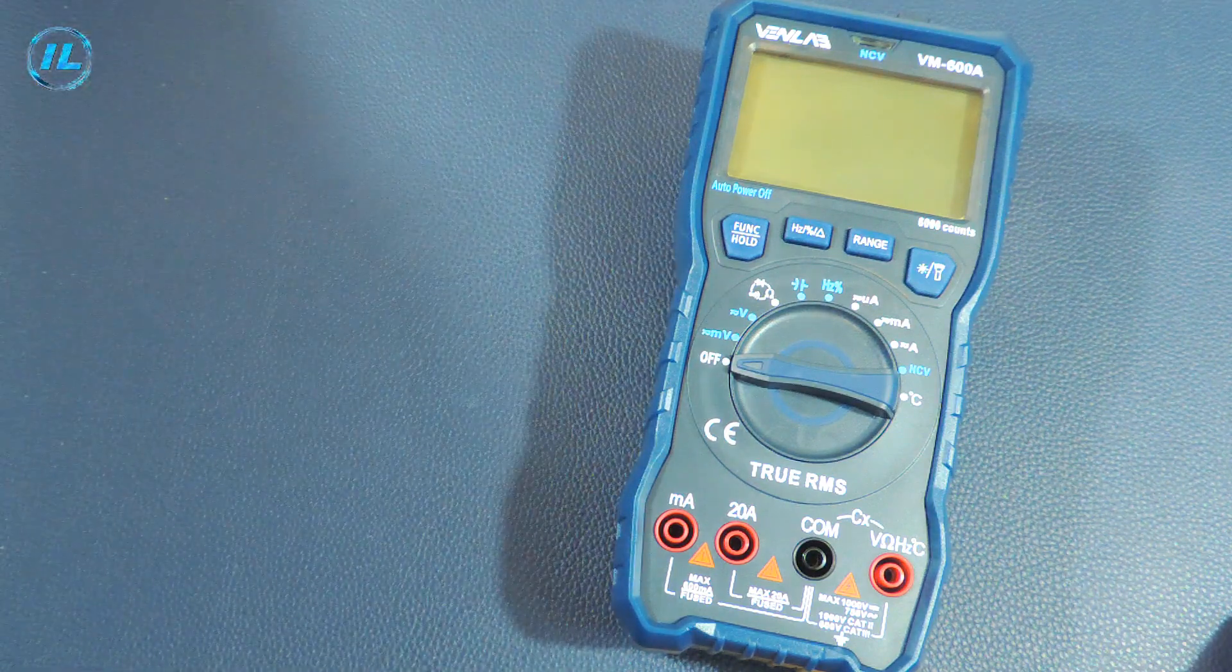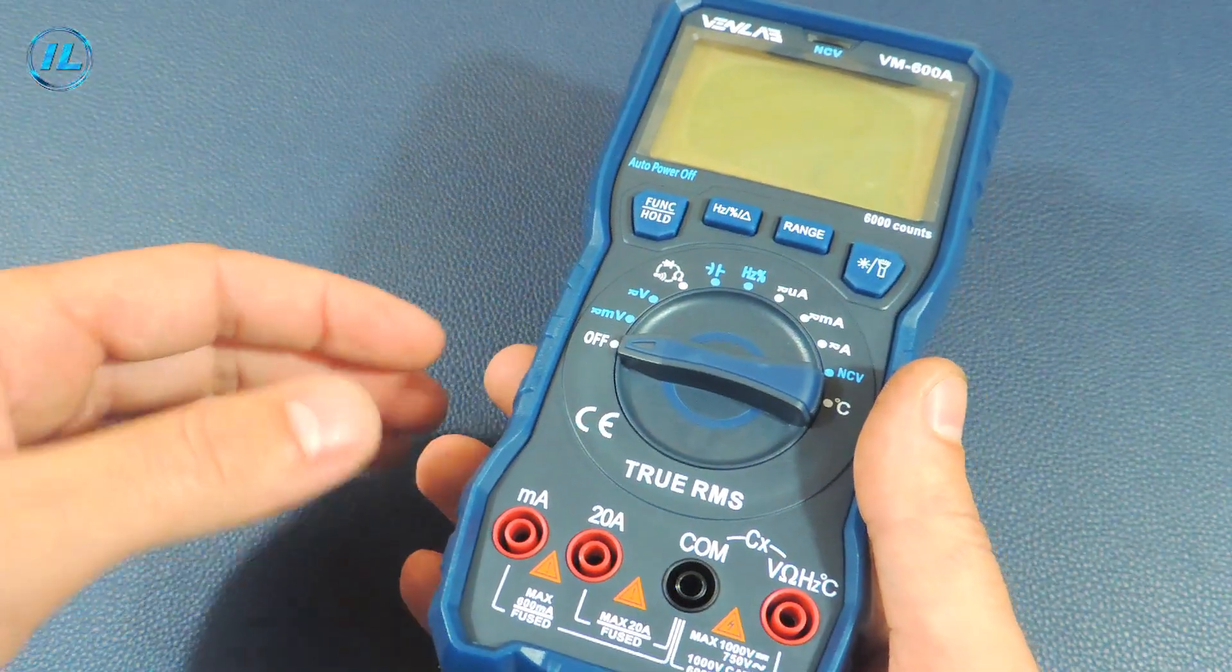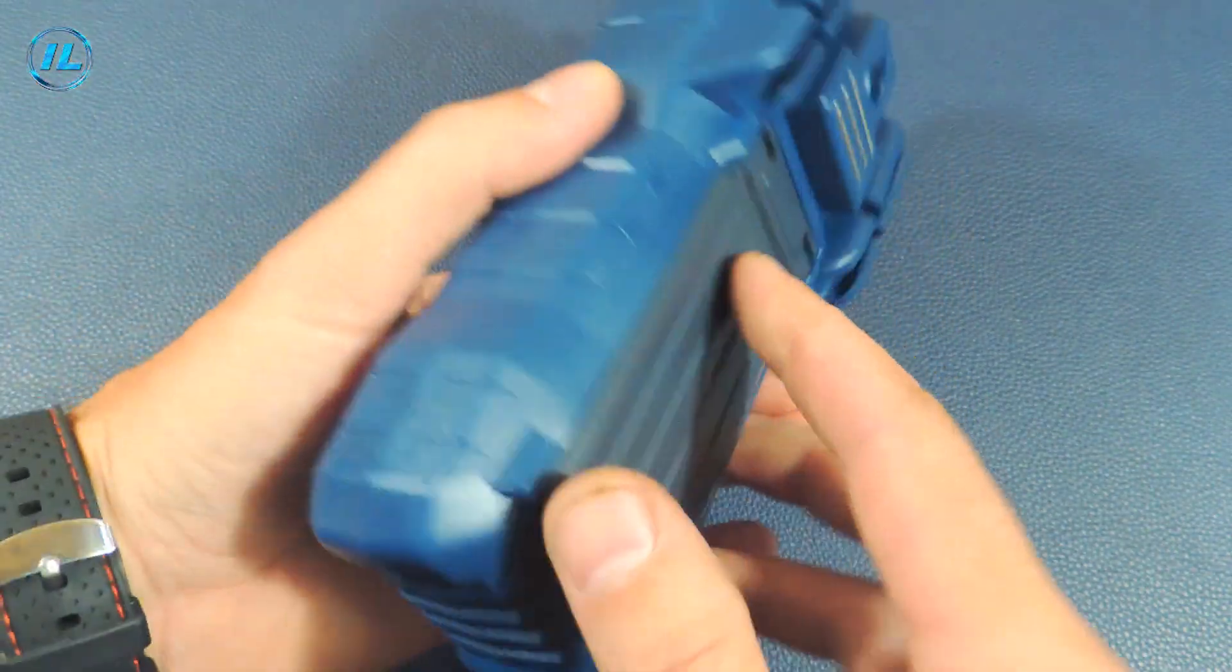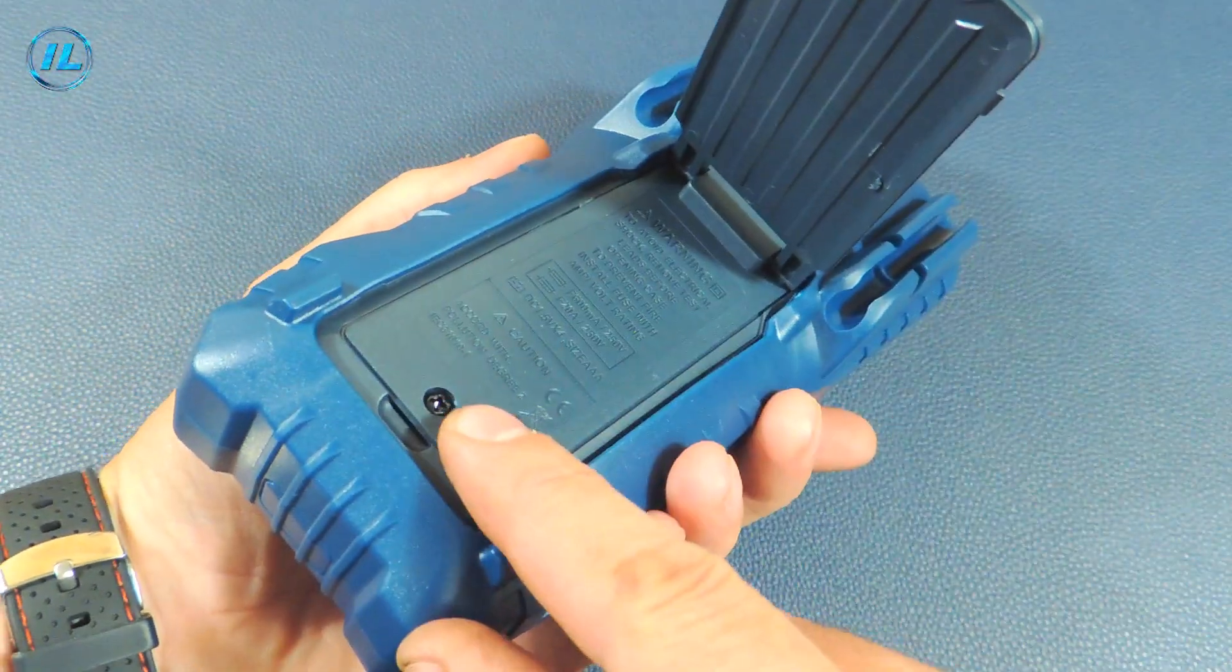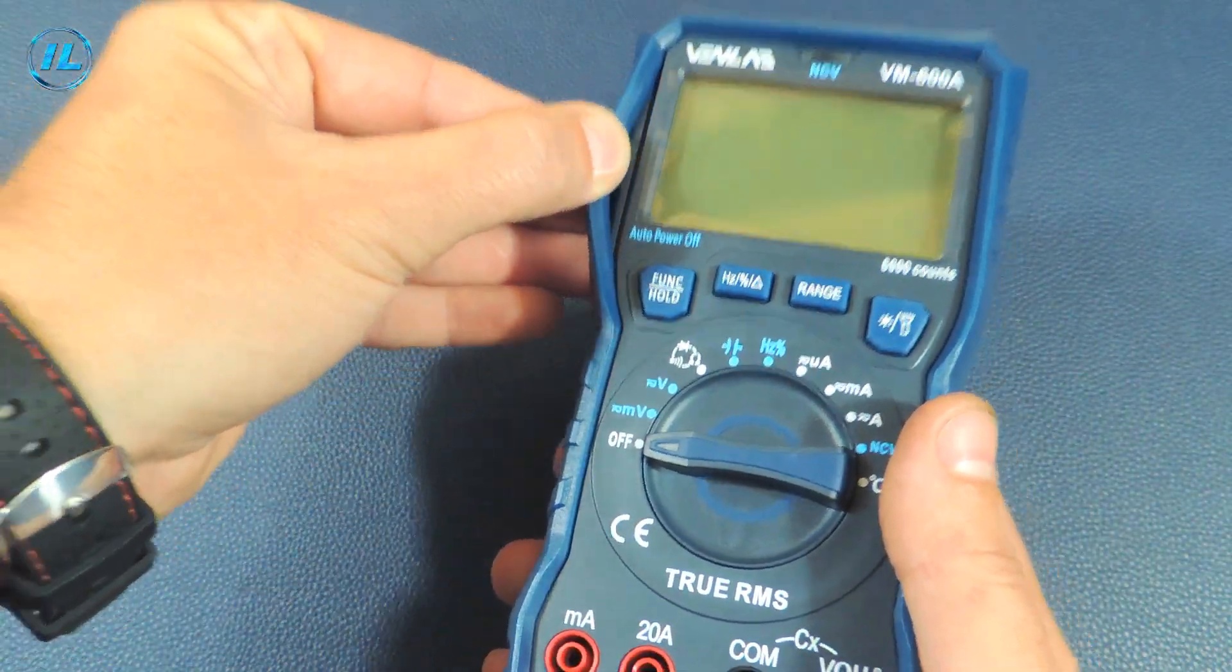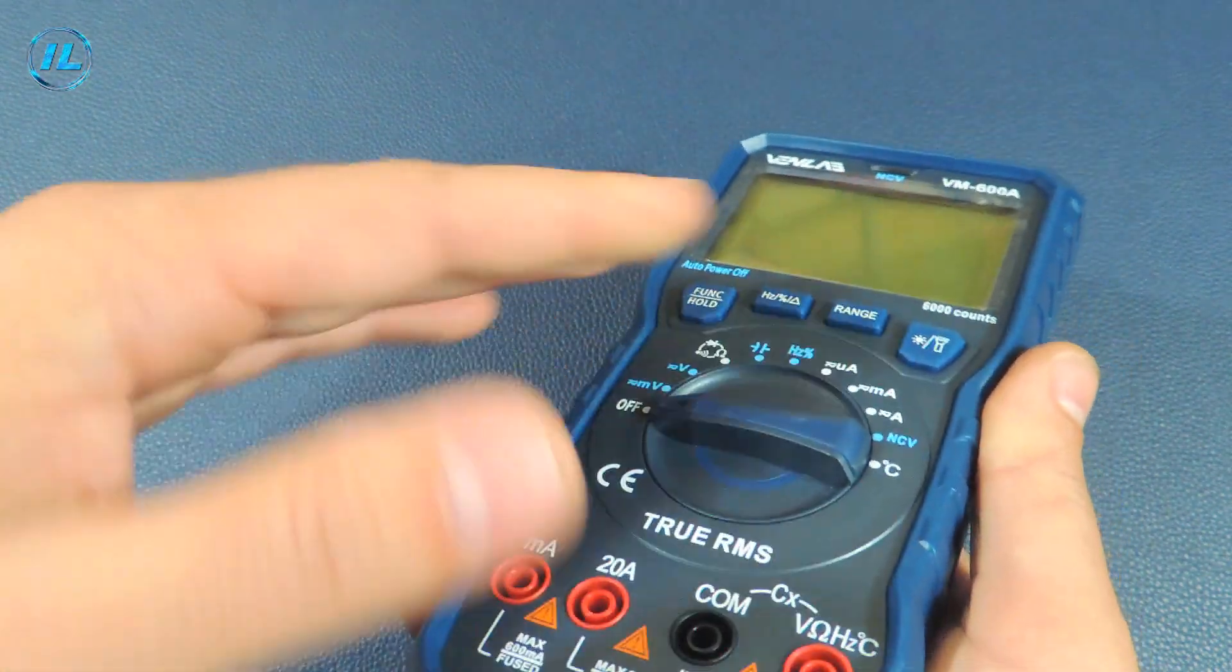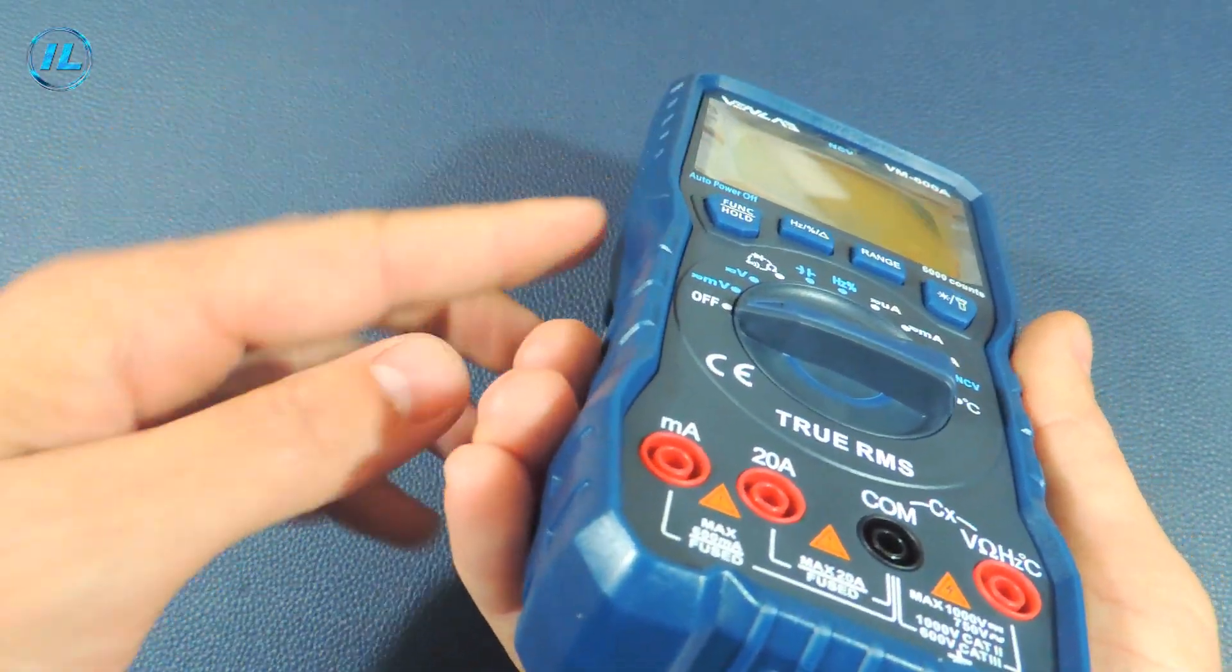First of all, I will install the batteries in this multimeter. To do this you will need to unscrew the back cover. By the way, it is worth noting the powerful rubberized case of this multimeter which reliably protects both the multimeter itself and the screen from damage.